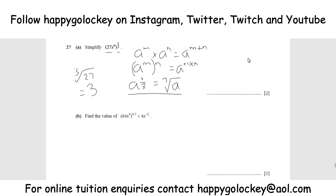That gives us 3, so part of the answer is 3. Then we've got x to the power of 6 in the brackets, to the power of a third outside. We multiply the powers: x to the power of 6 times a third. 6 thirds is 2, so we get x squared. Putting it all together, you get 3x². One mark for the 3, one mark for the x squared.